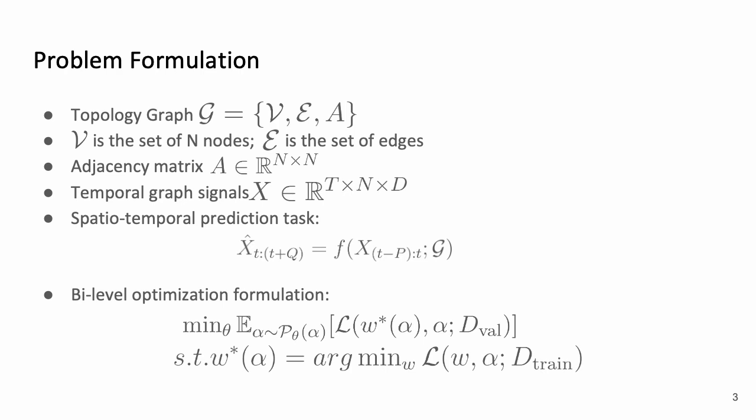The spatial temporal prediction task asks us to find a good predictor F that could predict the future Q step of X based on the past P steps of X.